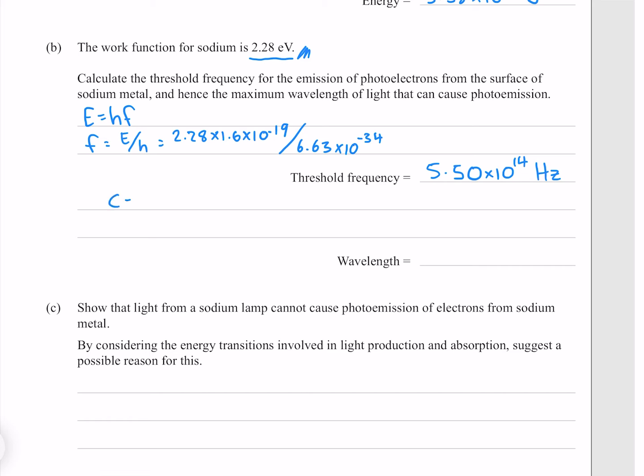Now we know that the speed of light is our frequency times wavelength, so our wavelength is the speed of light divided by the frequency. Putting both of these in gives me 5.45 times 10 to the minus 7 meters.